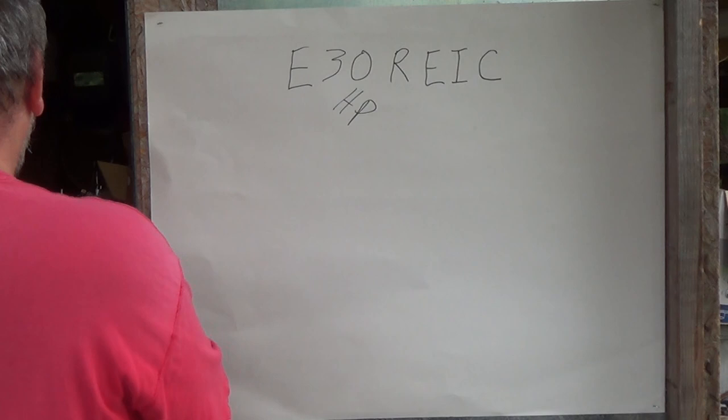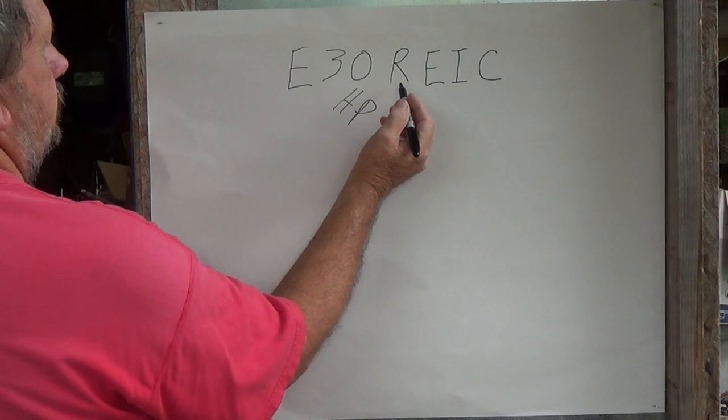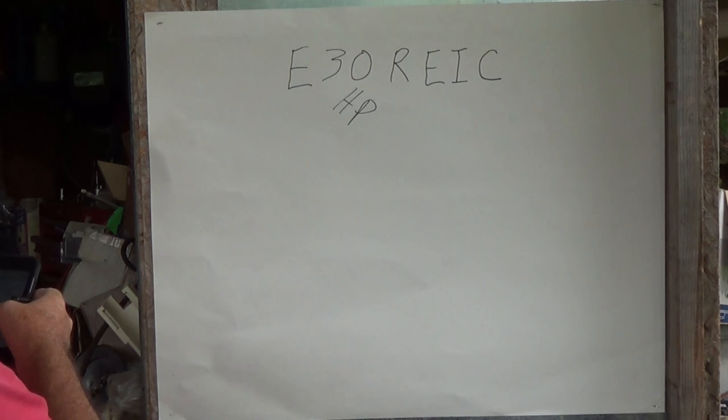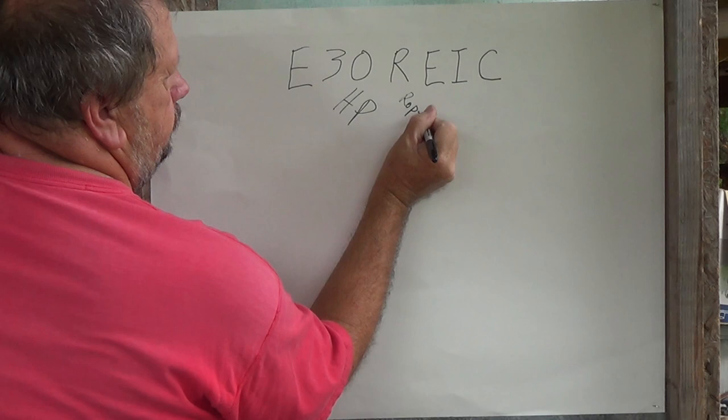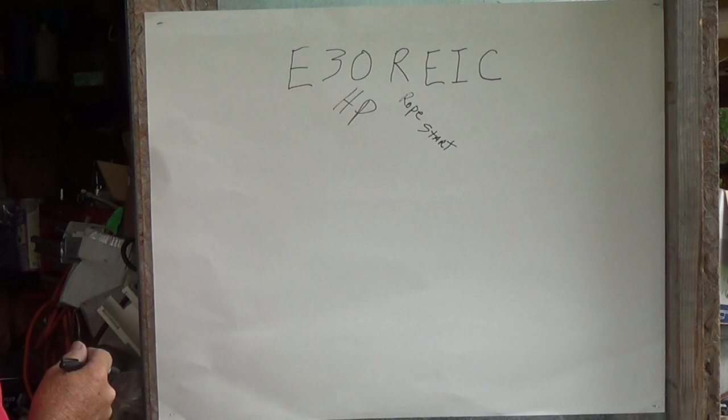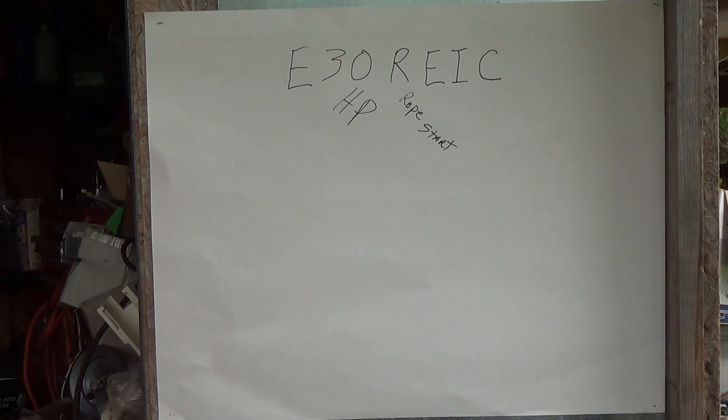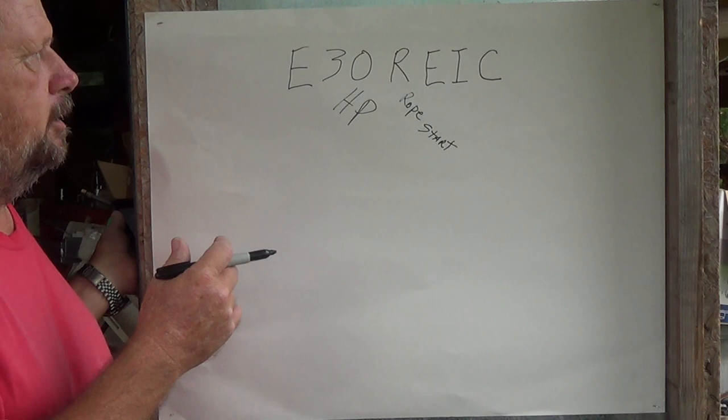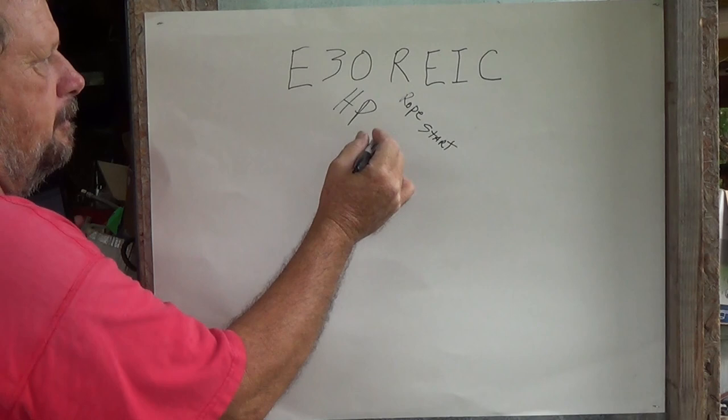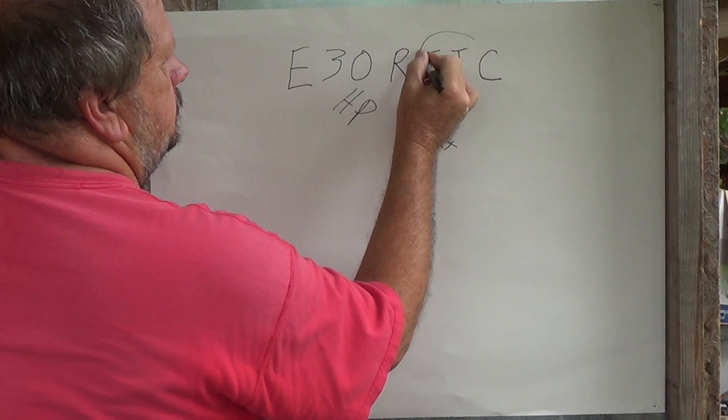Next one is going to be the horsepower, right here HP. The R is going to give some of the features of it. This R here stands for rope start. It also, if you look in the book, will tell you that it will be a manual primer. If that was an E it might be electric primer or something, but we're rope start manual primer on the R. Next two letters right here, these are the ones you want.